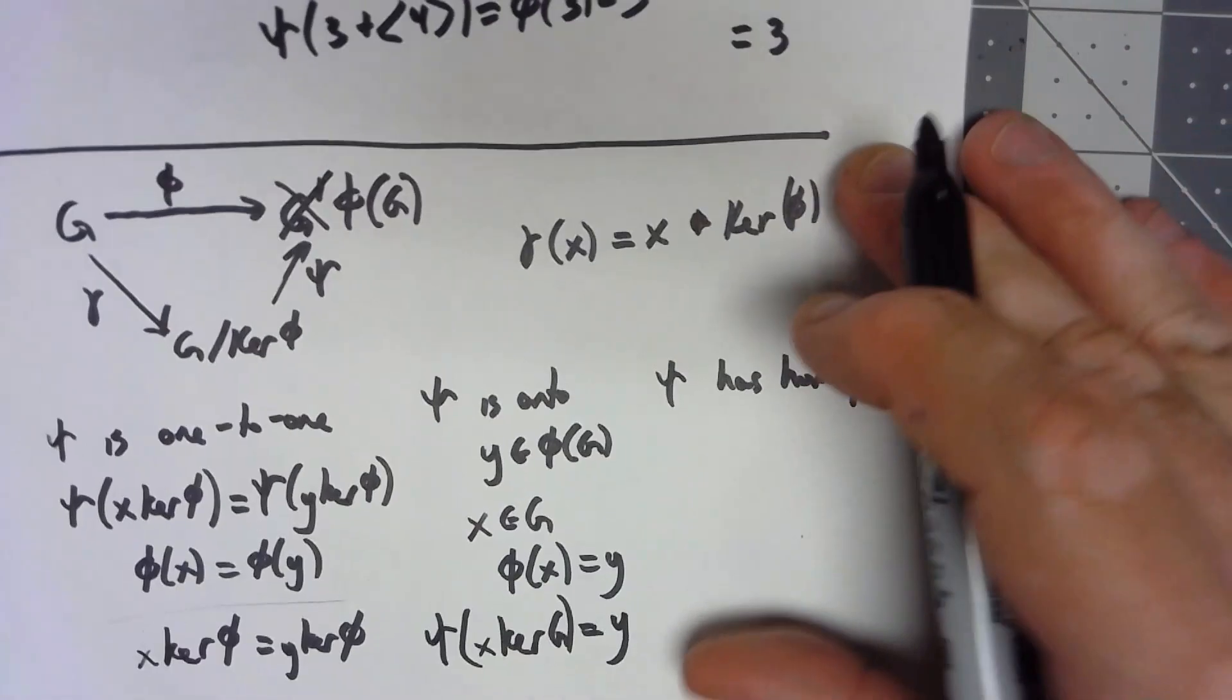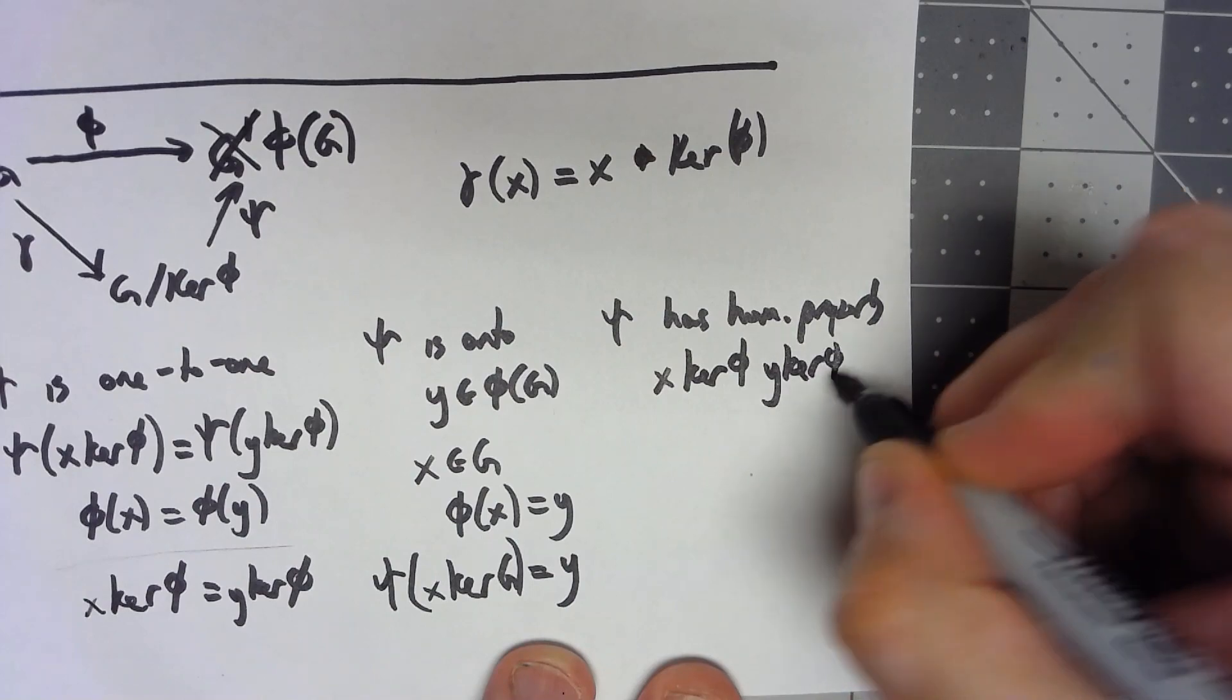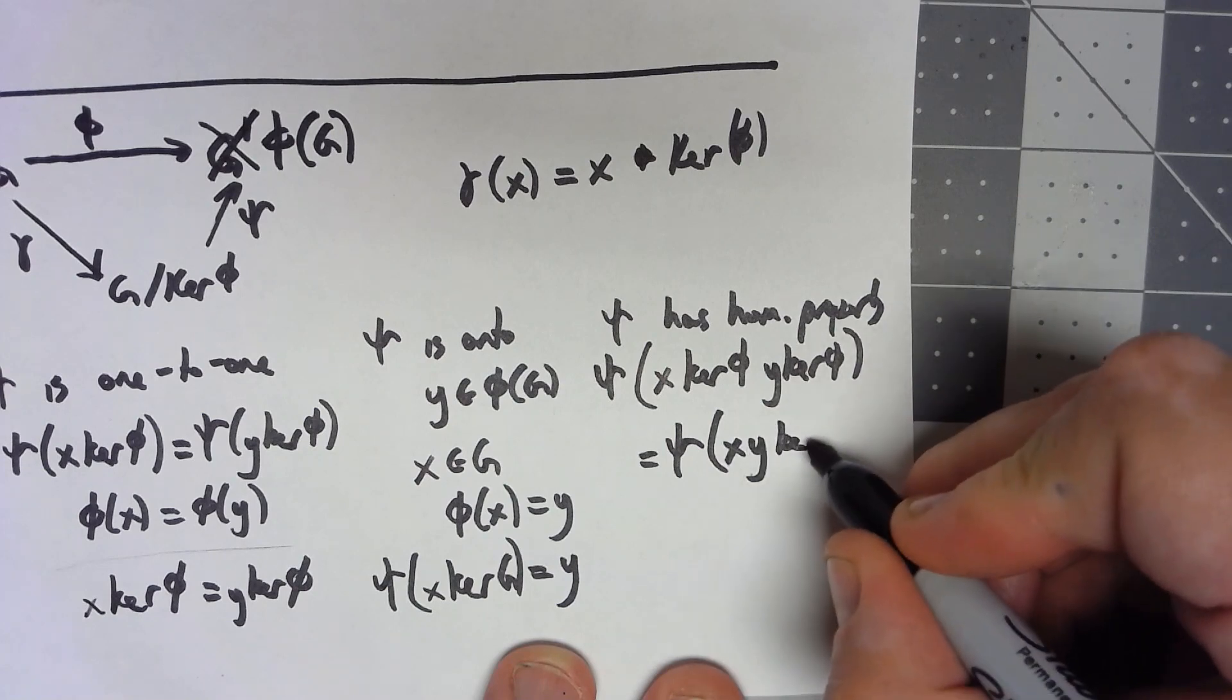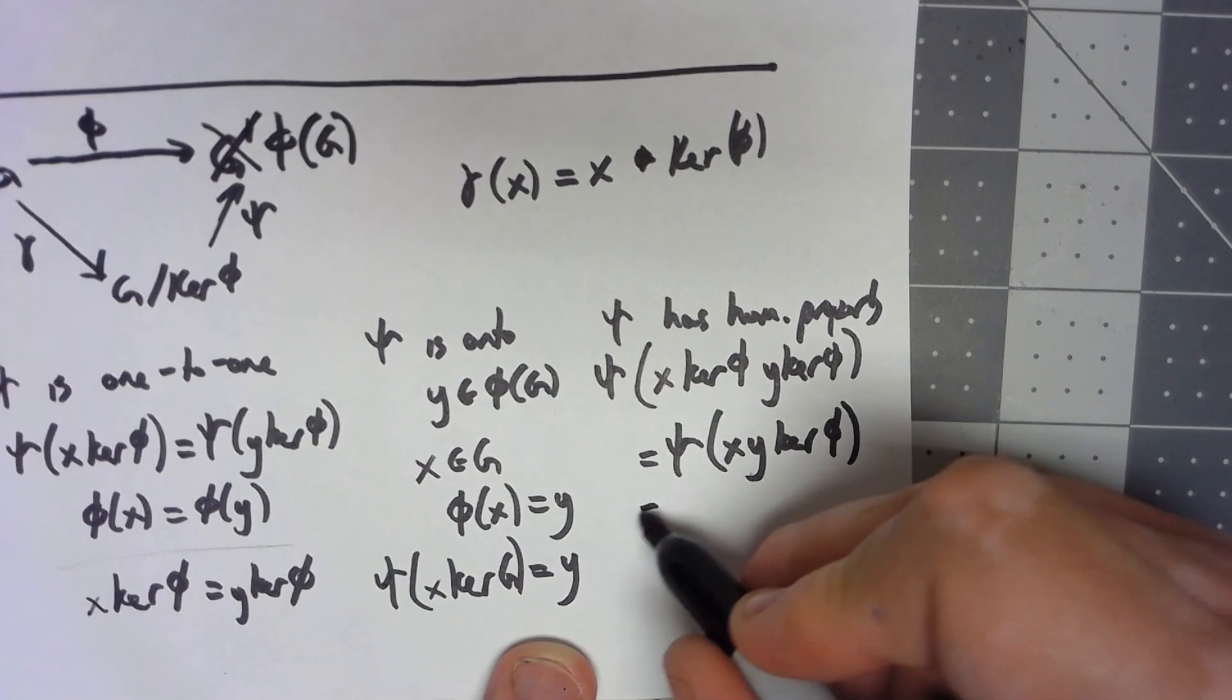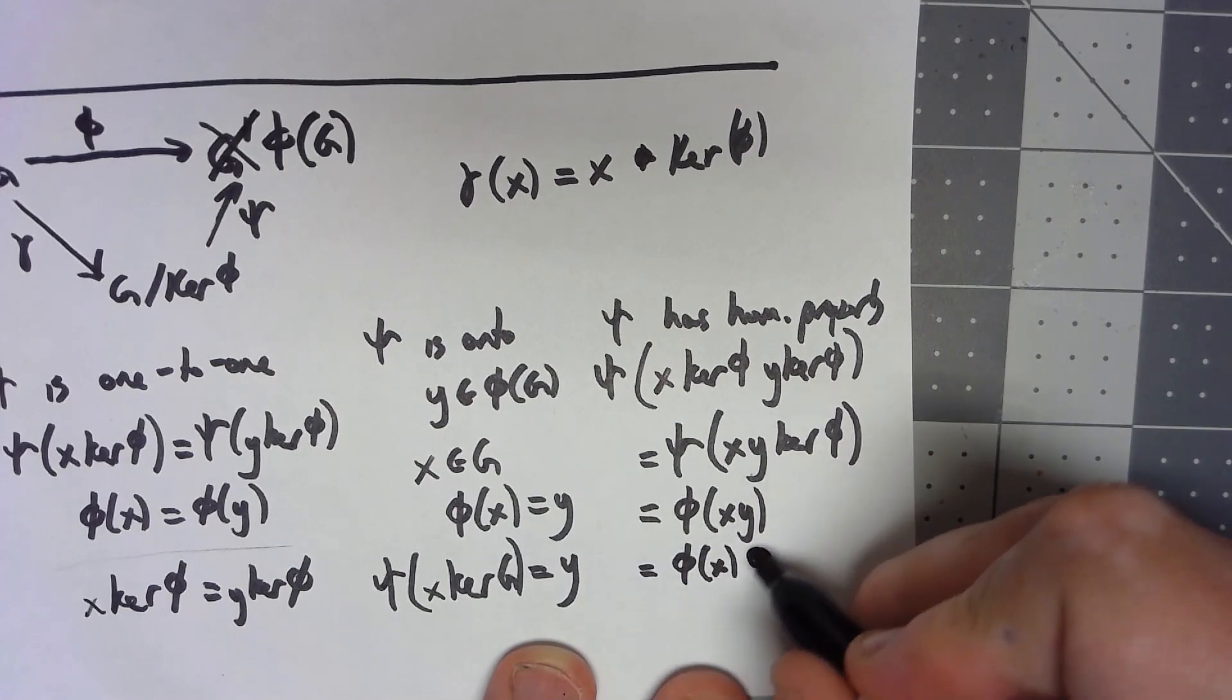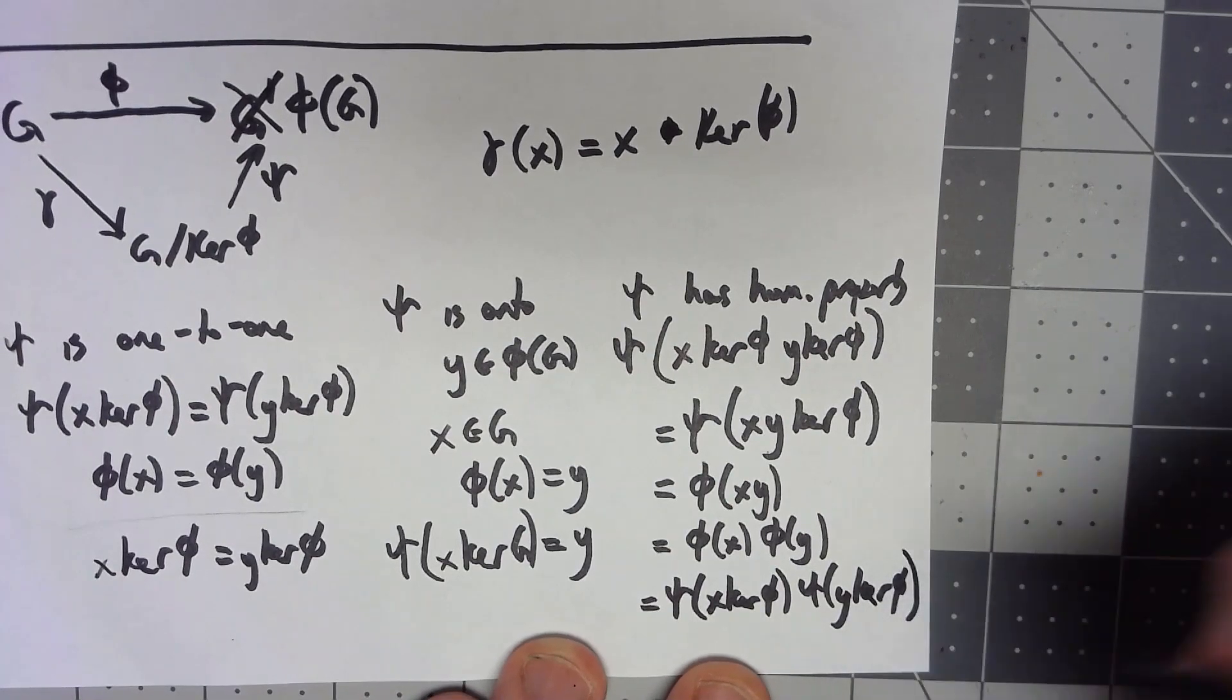Finally, showing it has the homomorphism property. So suppose we've got two cosets. We've got x kernel of phi and y kernel of phi. We're going to apply chi to that. Well, so that's the same thing as applying chi to x, y kernel of phi, because that's the way our operation works in our coset, our factor group. Chi of that is defined to be phi of x, y. That's the same as phi of x, phi of y, because phi is a homomorphism. But that's equal to chi of x kernel phi, chi of y kernel phi, and there we have it.